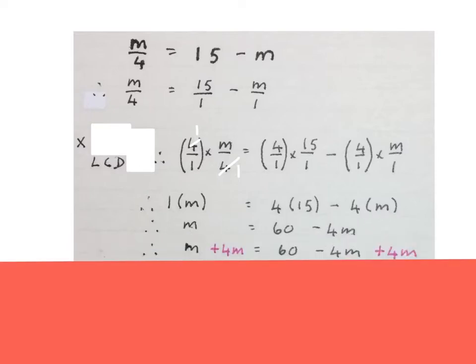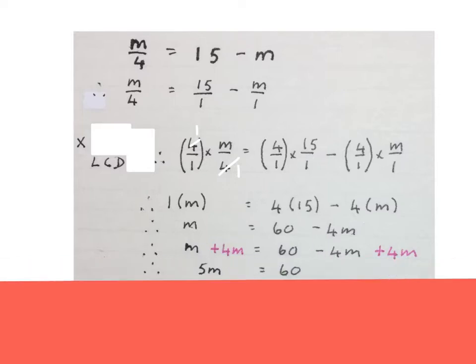Now we solve for m. To get the minus 4m away from this side and get it to this side I plus 4m on both sides. That gives me 5m equals 60.